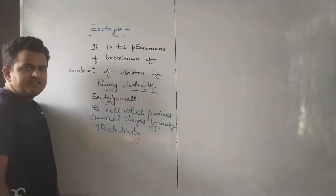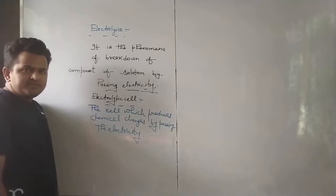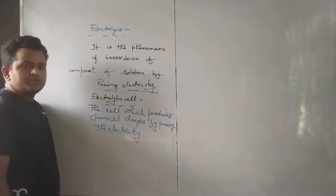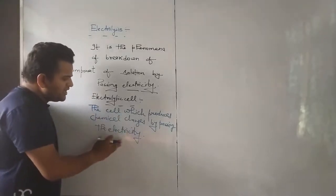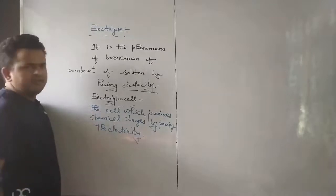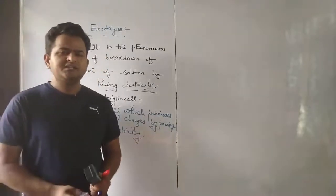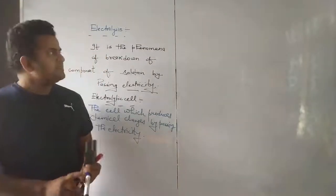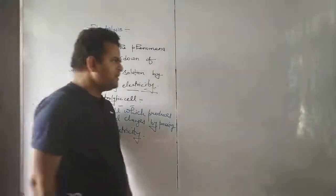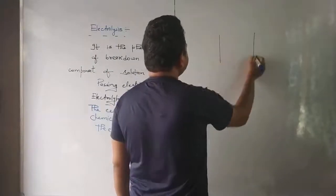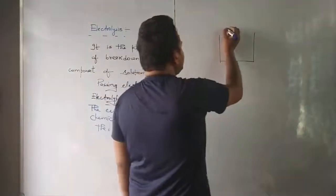Electrochemical cells are related, in which the cells convert chemical energy into electrical energy — we call those electrochemical cells. Now let's look at the electrolytic cell. We have the diagram of the electrolytic cell here.